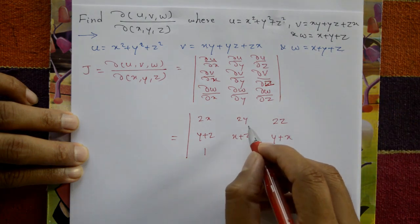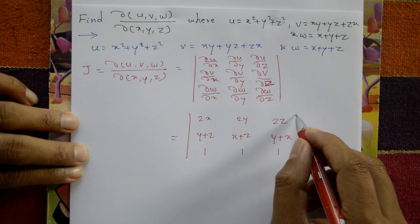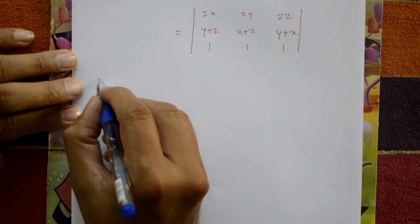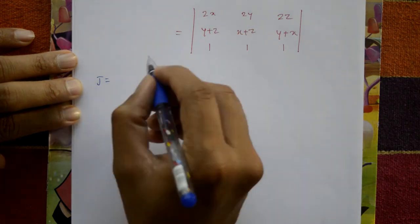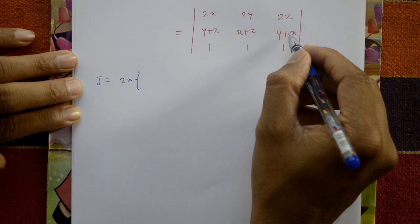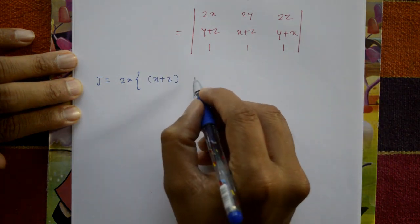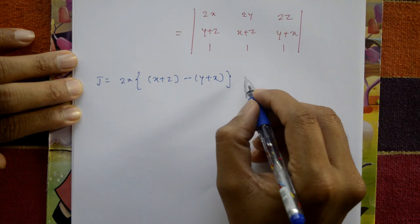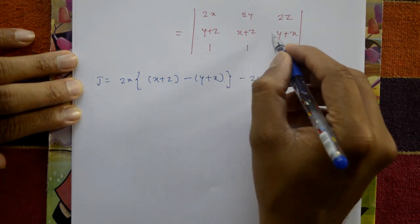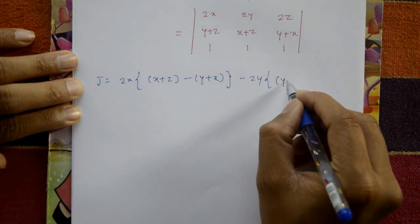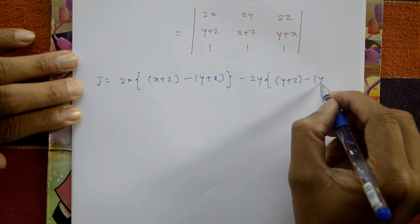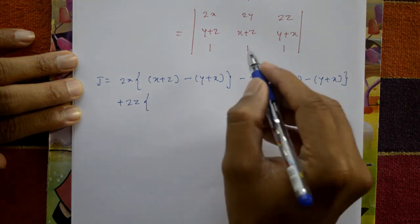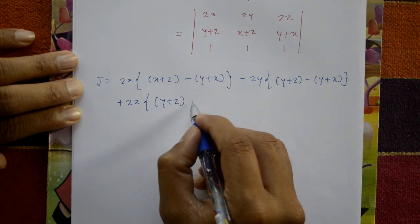For w = x + y + z, treated as constants: ∂w/∂x = 1, ∂w/∂y = 1, ∂w/∂z = 1. Now J equals, expanding this determinant: 2x multiplied by cross multiplication of (x+z) minus (y+x), minus 2y for the four elements (y+z) minus (y+x).